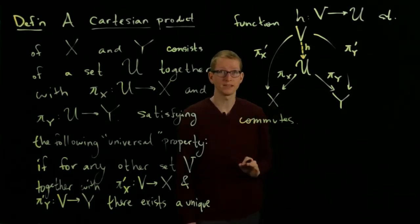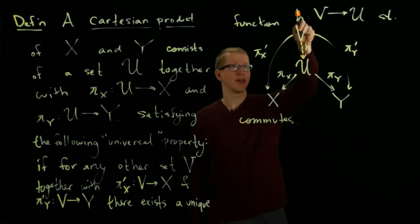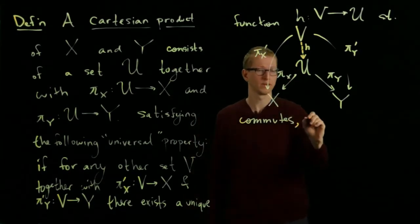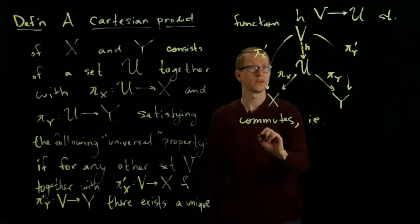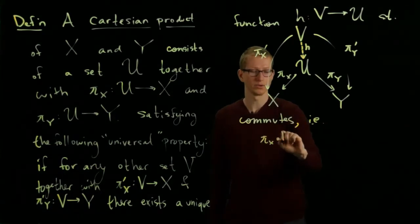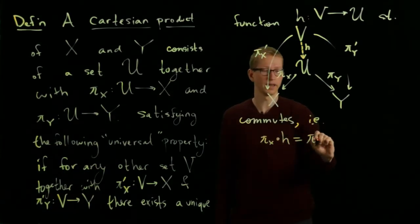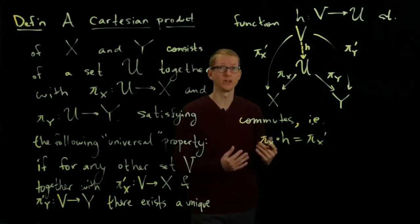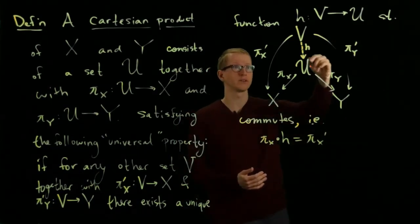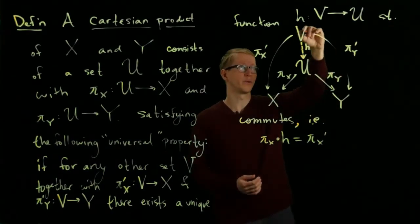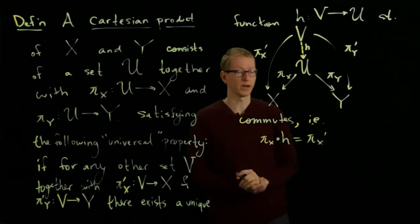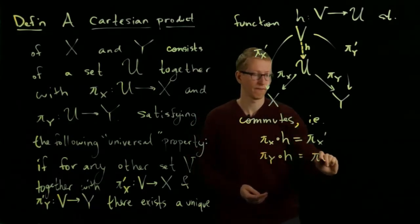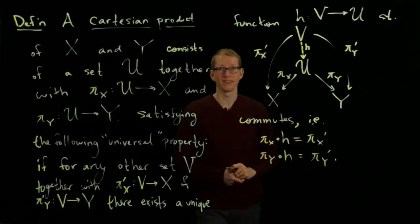Remember from last time what that means: H composed with πX equals π'X, i.e., πX composed with H equals π'X. That's one pair of paths in this diagram. There's another pair of paths on the other side, so H composed with πY equals π'Y.